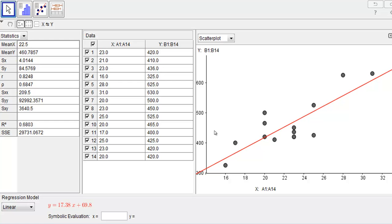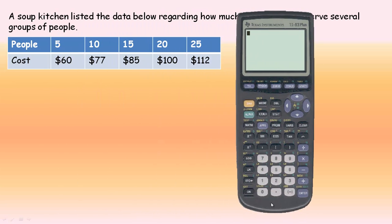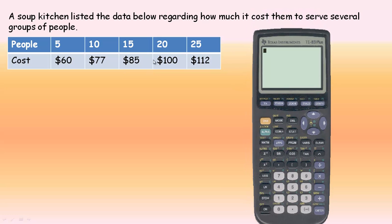I'm also going to show how to do it using a graphing calculator, one of the Texas Instruments ones. Here's my graphing calculator. I want to type this data. This is data from a soup kitchen. They're keeping track for different groups of people—5, 10, 15, 20, and 25—what the cost to feed them was.